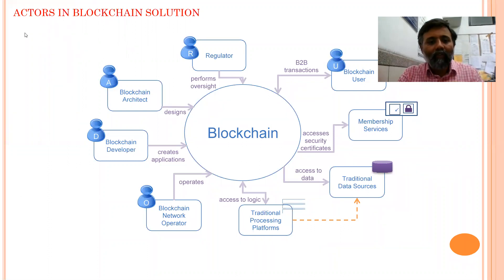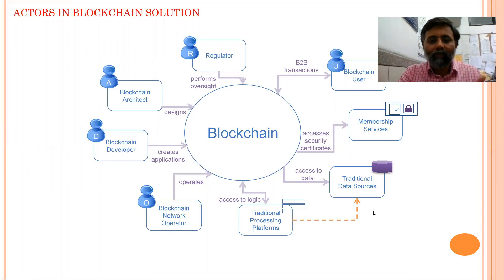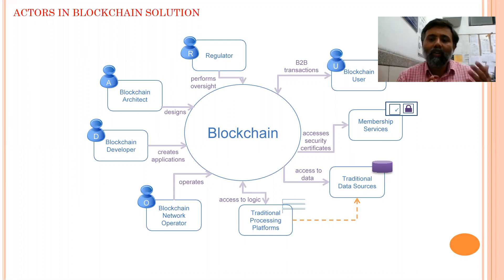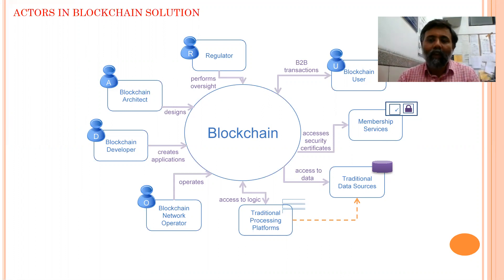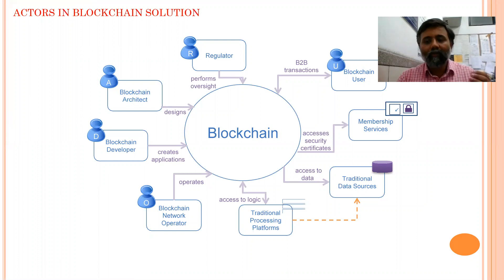In this figure we can see different actors are involved. We have traditional processing platforms and traditional data sources. Any blockchain solution will not function in a very isolated manner or as a very independent entity — it will cooperate and coordinate with the existing platform, and for certain problems this blockchain ecosystem will address.